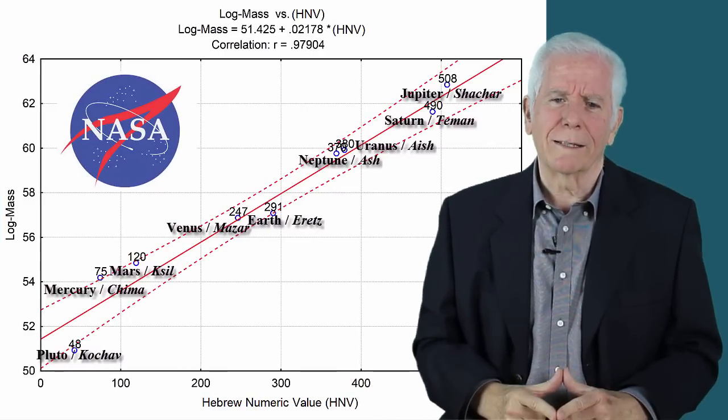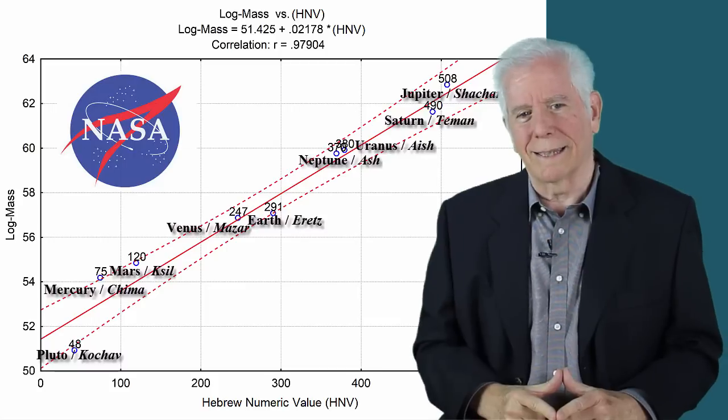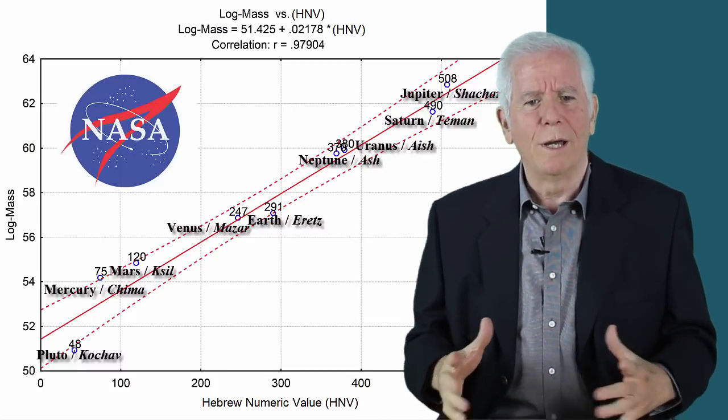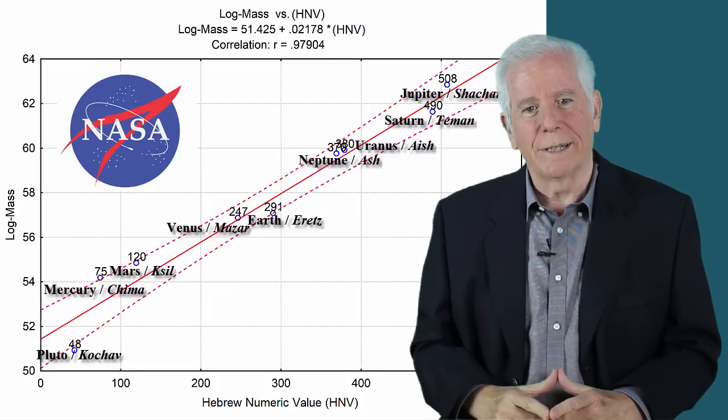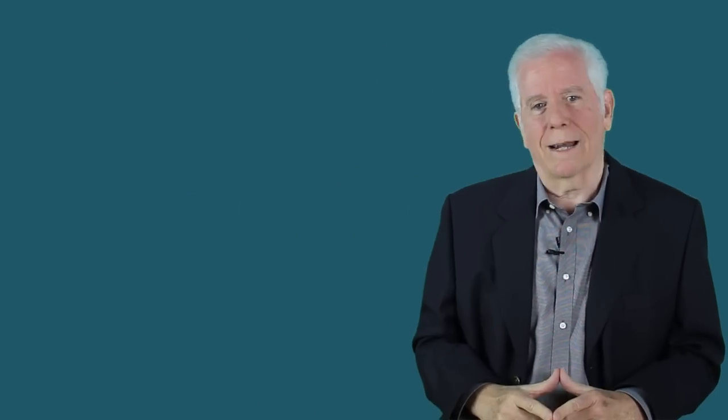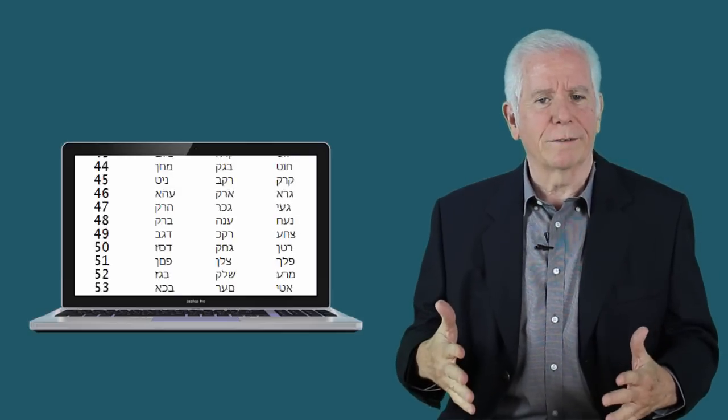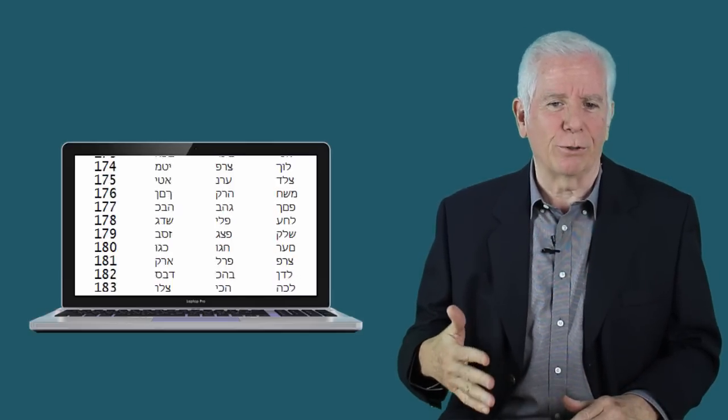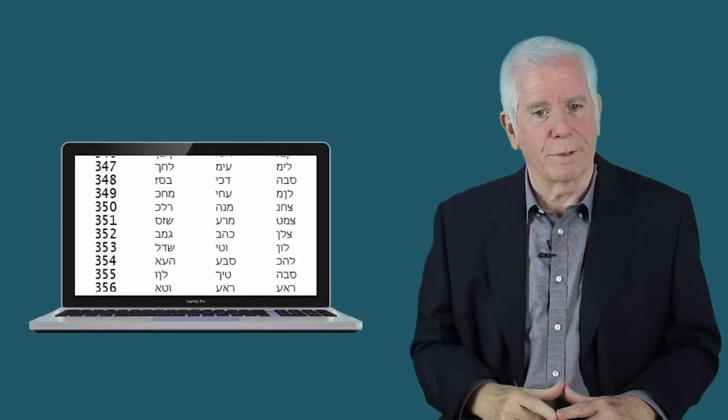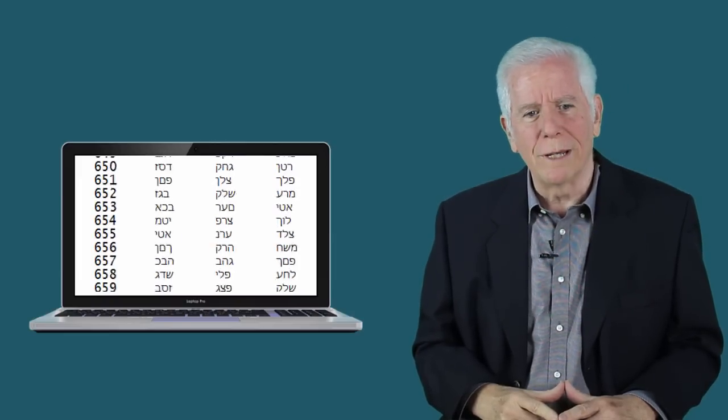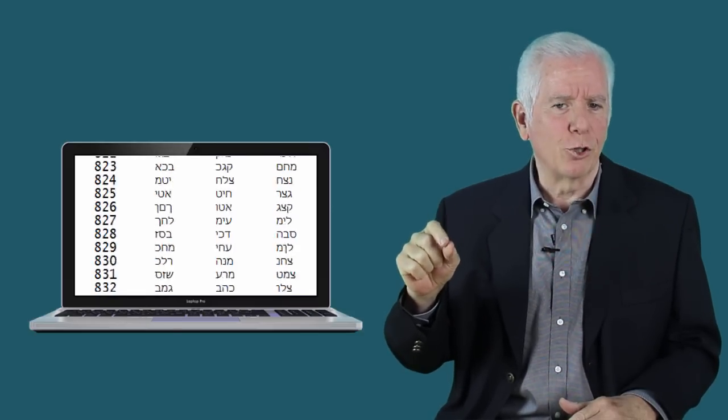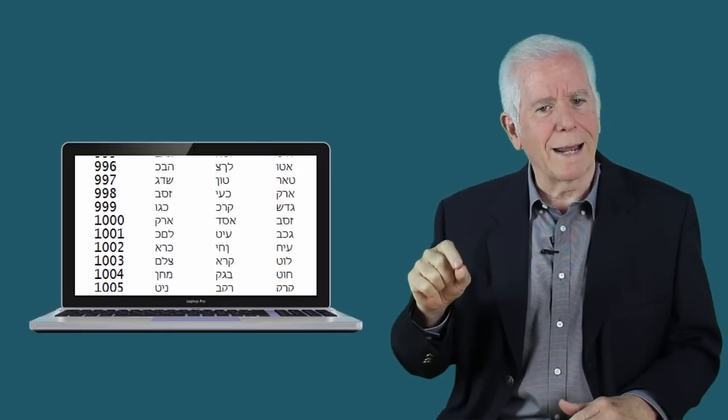You may now ask, perhaps such alignment of points near a straight line is highly likely to occur by random with biblical Hebrew words. Maybe there is nothing unusual or even extraordinary about these results. To check this claim, I have conducted a large scale simulation study on the computer. In this study, I have programmed the computer to artificially generate, by random, thousands of trios of words like the three words in the first three examples.